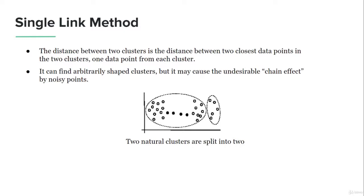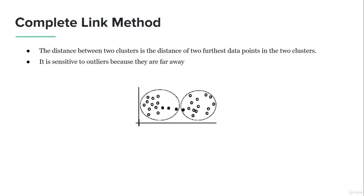The complete link method takes the distance between the two farthest data points in two clusters, which solves the chain effect problem. However, since we're considering the farthest data points, and the data points farthest from the domain are typically outliers, this algorithm is sensitive to outliers — it might consider them part of a cluster and make the same mistake as the single link method.